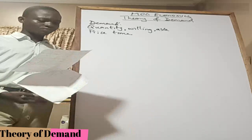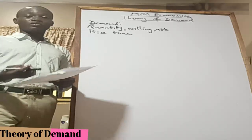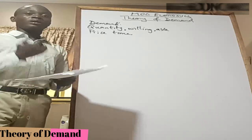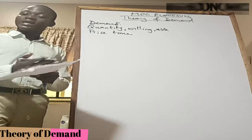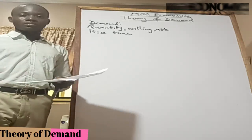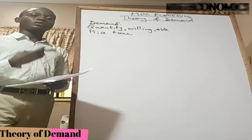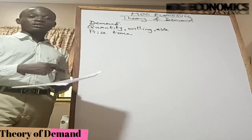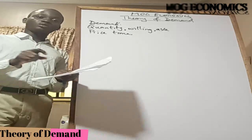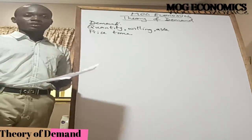After that, we move into individual demand and market demand. Individual demand is the demand for goods and services by one consumer at a given price and at a particular time. Market demand, on the other hand, refers to the total quantities of goods and services that all the consumers of a product are willing to buy at given prices and at a particular period of time.